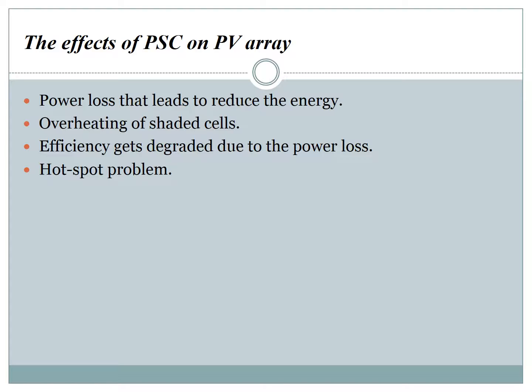Regarding the effects of partial shading condition on the photovoltaic array: in case of non-uniform irradiance, the power loss will increase proportionally to the number of shaded cells. As a consequence of non-uniform irradiance, overheating of shaded cells will appear as a hot spot problem. In addition, the overall photovoltaic system efficiency gets degraded due to power loss, reducing energy yield as well. If the system is not suitably protected, the hot spot problem can emerge and in several cases the system can be irreversibly destroyed.